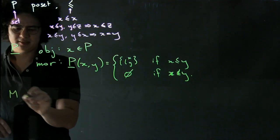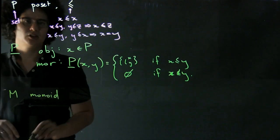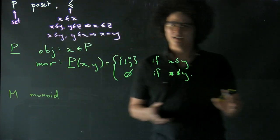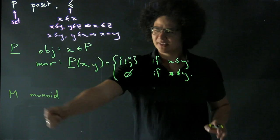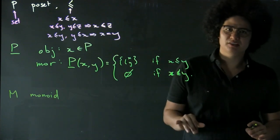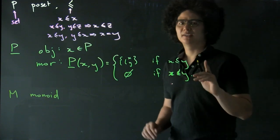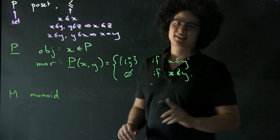We're going to take M to be a monoid, which you can think of as a group without inverses. So M is a set. It has a binary operation on it, which is associative. And it has an identity element, but not every element has an inverse.